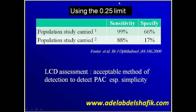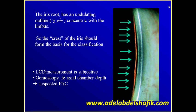There were two studies checking the one-quarter depth threshold. It was very sensitive and could diagnose narrow angles in 99% of cases in one study, and 80% in the second study. However, they also included normal angles, with 66% and 17% false positives respectively, so it is very sensitive but not highly specific. It is still a simple screening method.